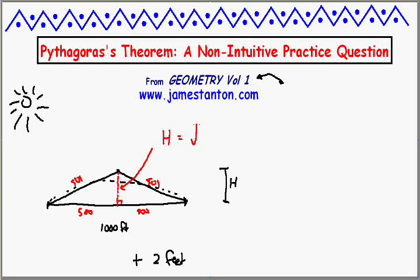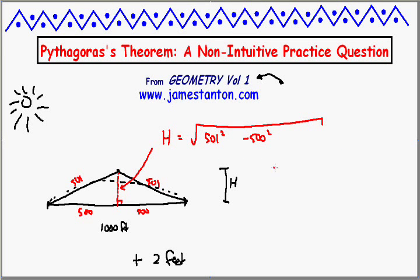So by Pythagoras' theorem, the height of this beast is square root of 501 squared minus 500 squared. And I get out my calculator. It's the square root of 1,001, which is fine. And now comes the surprise. If you actually work out what that's approximately equal to, that's about 31.6 feet.